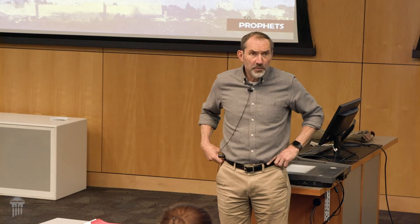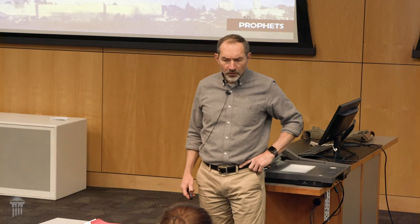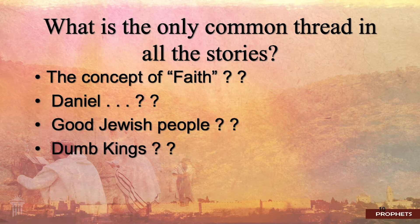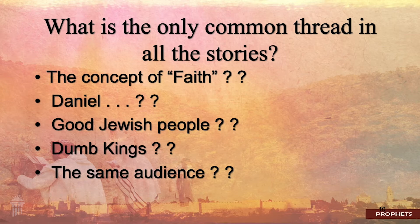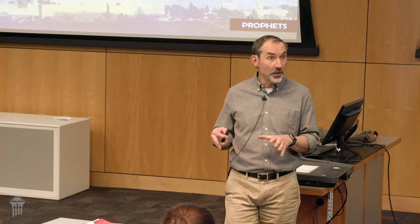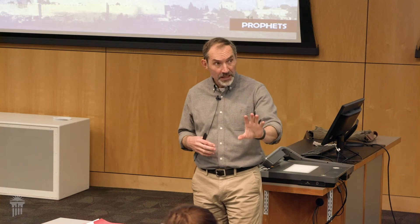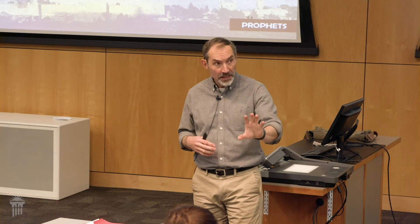Here are some clues. Is the common thread the concept of faith? Is it Daniel himself — after all the book is named after him? Is it good Jewish people? Is it dumb kings? Or is it the same audience — because the audience is mentioned interestingly. What is the common thread in all the stories? First chapter — still written in Hebrew because this is for God's people. When interpreting stories, what do you always look for first? You look for a caption — a statement that tells us what these stories mean.